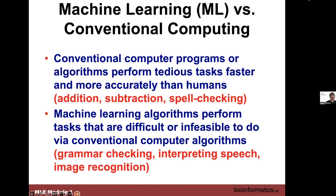Speech recognition and image or face recognition are difficult tasks for traditional programming but well-suited to machine learning. It's important to recognize when to use conventional computing versus machine learning — number crunching and statistics, even multivariate statistics, are often best done through conventional computing. Being able to distinguish when to use which approach is really, really important.